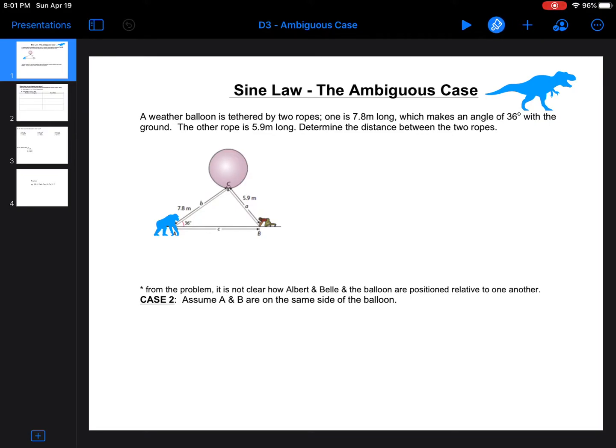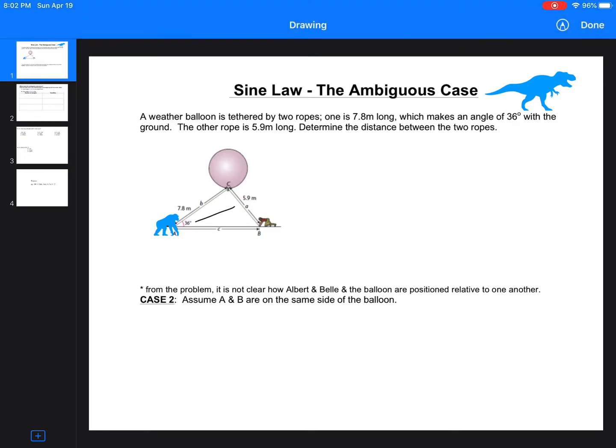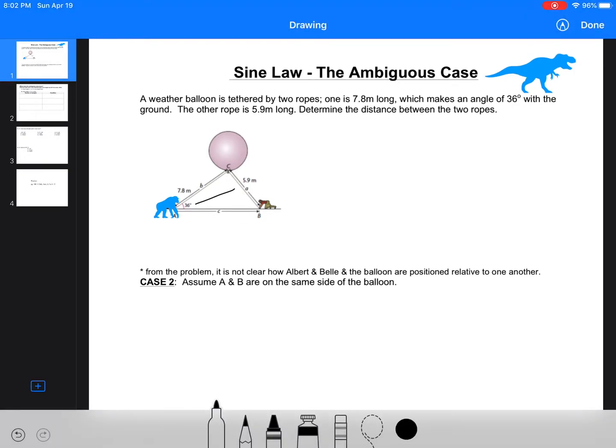Looking at sine law in the ambiguous case. The ambiguous case is just talking about sine law because there is something, depending on how the triangle is made, we can look at triangles in a different way. So a good example is this one below. We've got a weather balloon tethered by two ropes. One is 7.8 meters long, which makes a 36 degree angle with the ground, and the other rope is 5.9 meters long. Determine the distance between the two ropes.